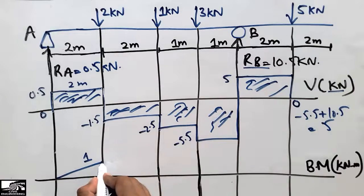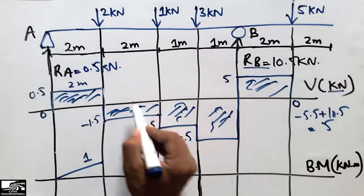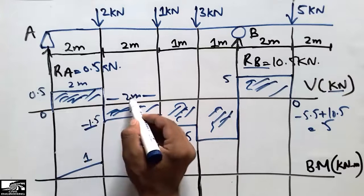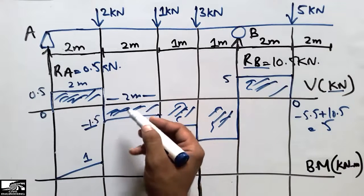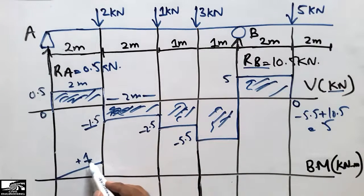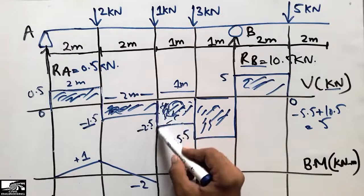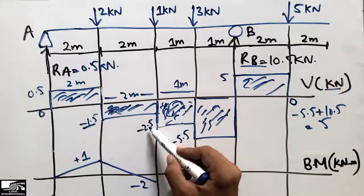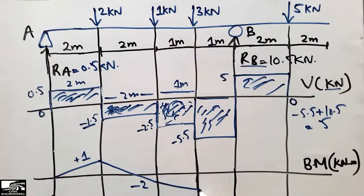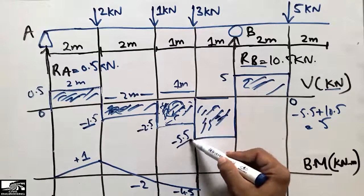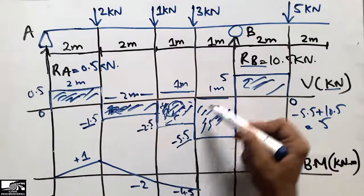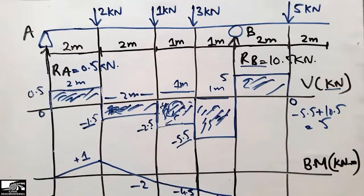The next rectangle has a depth of −1.5 and length 2 m: −1.5 × 2 = −3; adding to the previous: 1 − 3 = −2 kN·m. The next rectangle: −2.5 × 1 = −2.5; total: −2 − 2.5 = −4.5 kN·m. The next rectangle: −5.5 × 1 = −5.5; total: −4.5 − 5.5 = −10 kN·m.